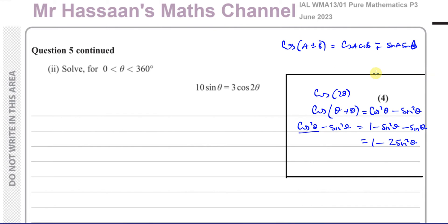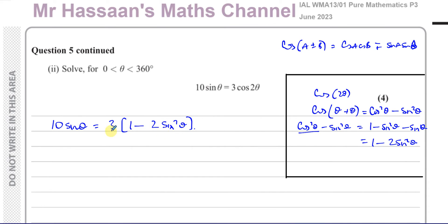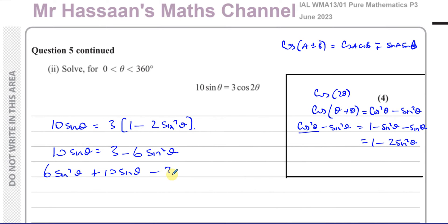So we have 10 sin θ = 3(1 − 2sin²θ). Expanding gives 10 sin θ = 3 − 6sin²θ. Bringing everything to one side to use the zero product property: 6sin²θ + 10 sin θ − 3 = 0.